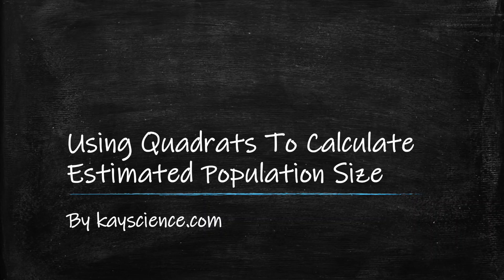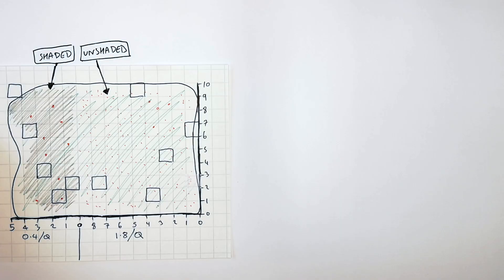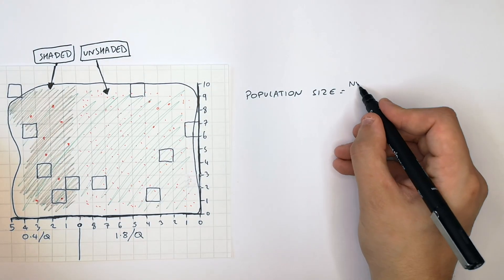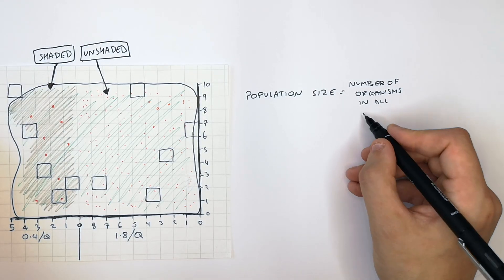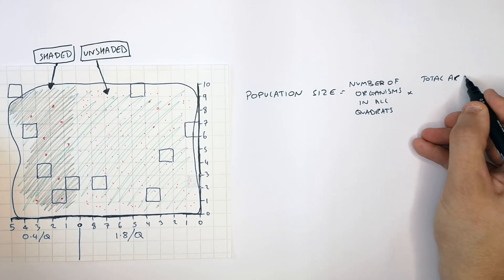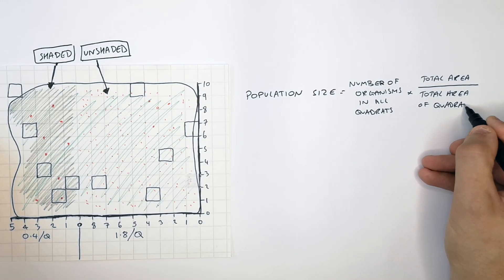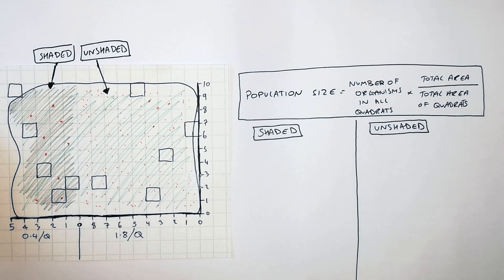Using quadrats to calculate the estimated population size, by KScience.com. We can estimate the population size of the number of plants in both the shaded and unshaded area by using the equation: population size equals number of organisms in all the quadrats, times by the total area, divided by the total area of quadrats. This equation is effectively multiplying the mean by the total area.